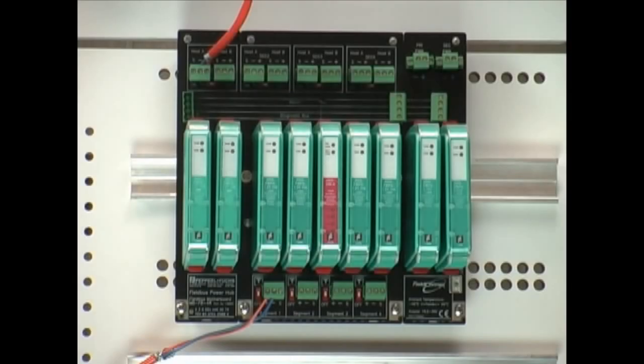The second component that makes up a Foundation Fieldbus segment would be the Foundation Fieldbus power supplies. This is an example of Pepperl & Fuchs Power Hub. There are different numbers of segment options. This is a four segment redundant supply.